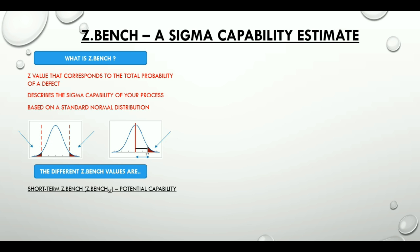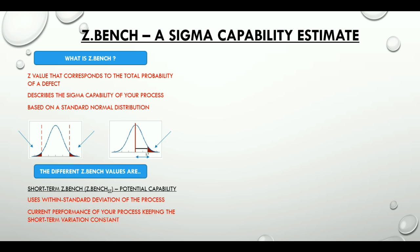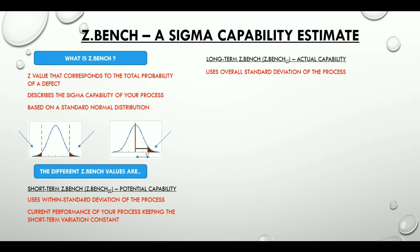The different types of ZBench values are: short term, also called the potential capability. This uses the within standard deviation of the process — that is, within subgroup — and exhibits the current performance of the process keeping the short-term variation constant. Long term ZBench, also called the actual capability, uses the overall standard deviation of the process and represents the quality the customer receives over a period of time.